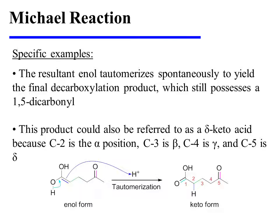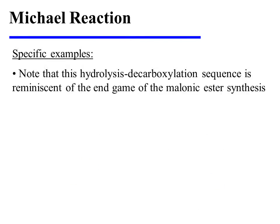This product could also be referred to as a delta-keto acid, because C2 is the alpha position relative to the acid, C3 is the beta position, C4 is the gamma position, and C5 is the delta position. Note that this hydrolysis-decarboxylation sequence is reminiscent of the endgame of the malonic ester synthesis, and you may wish to refer back to that video to see the connection more clearly.